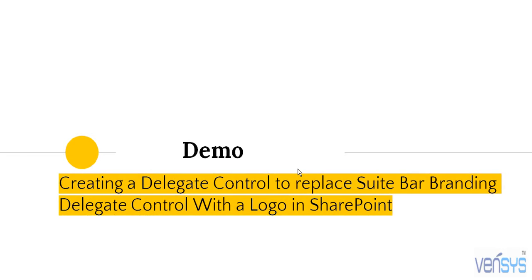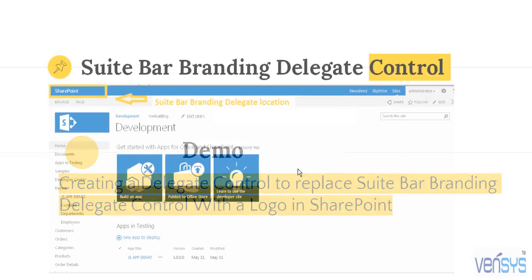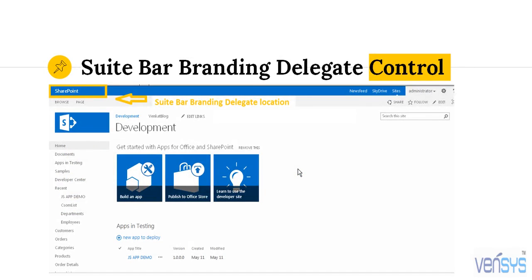Now we will see a small demo. In my demo, I will be taking the SuitBar Branding Delegate Control and replacing it with a logo. If you look at the screenshot available here, in the top left corner you can see the text 'SharePoint'. I am using the on-premises environment, so in the on-premises environment you can see the text as 'SharePoint' itself.